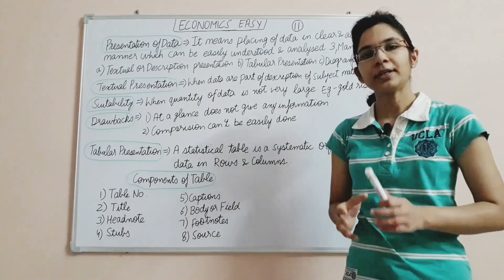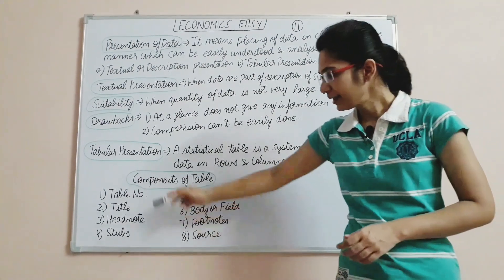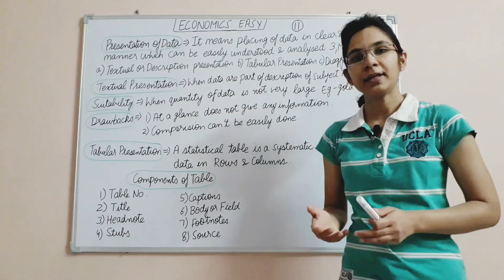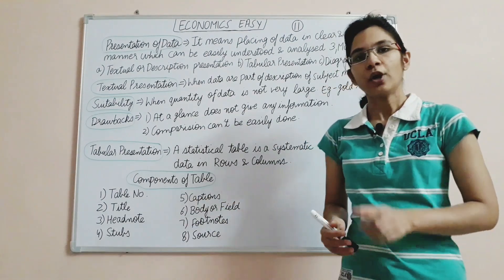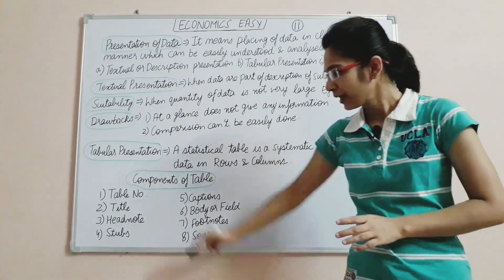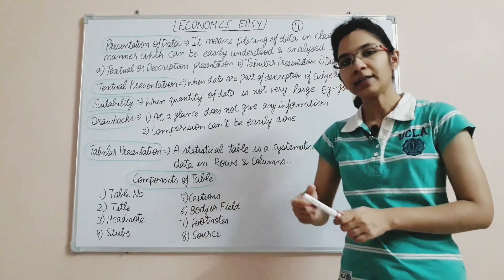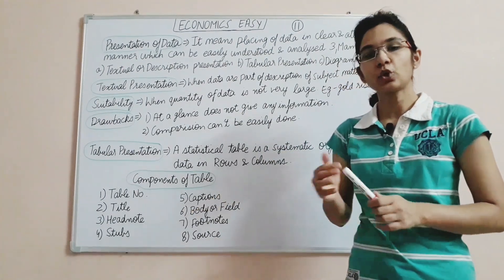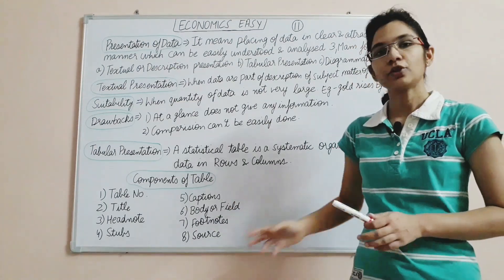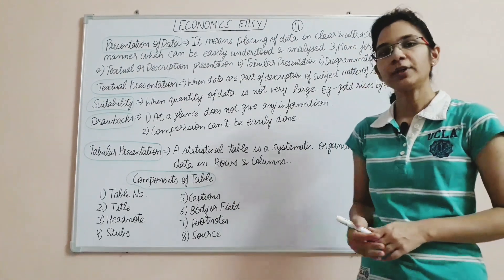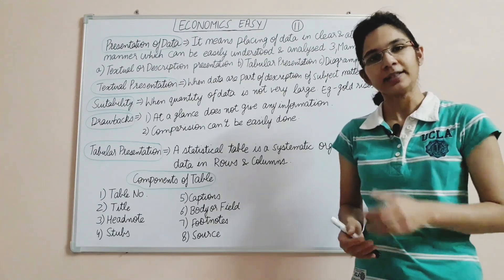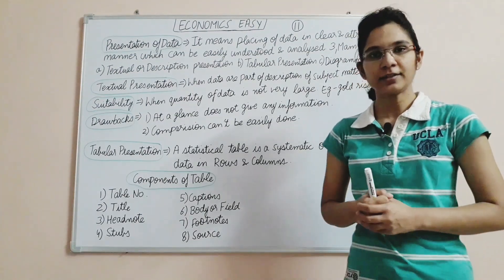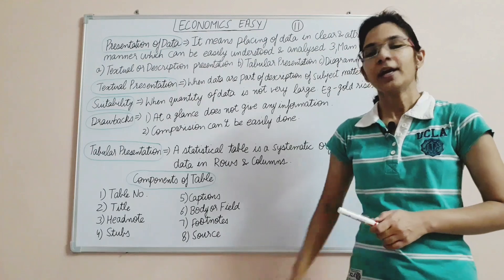Now what are the components of a table? First is the table number — which is first, second, third. Second is the title — which tells us clearly what the table is about. Third is the head note, which appears on top below the title. Fourth is stubs — the heading of a row is called stub. Fifth is caption — the heading of a column is called caption. Sixth is the body or field — all the matter inside the table. Seventh is footnotes. And the last is sources — if data is collected from a secondary source, we must write the source.